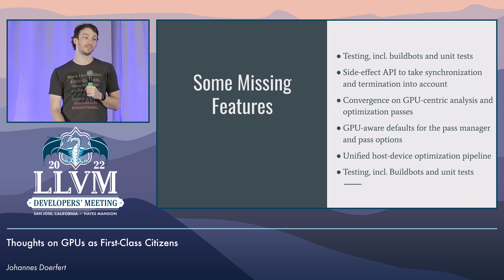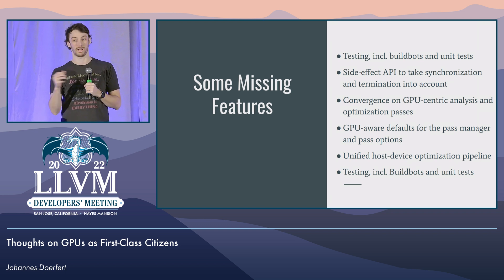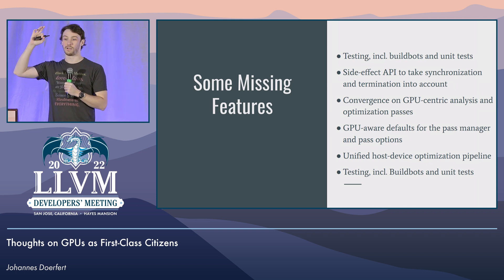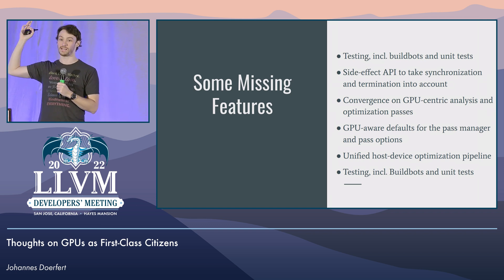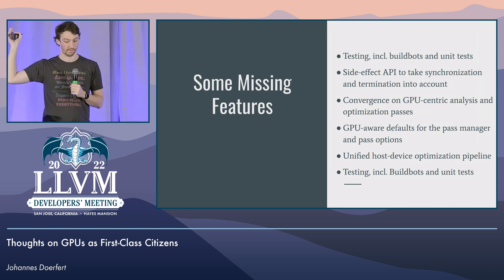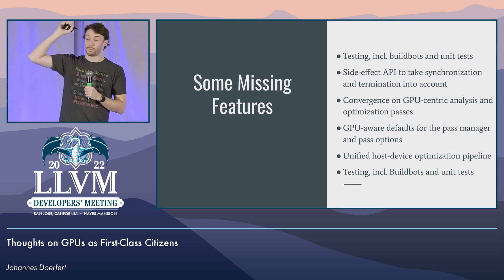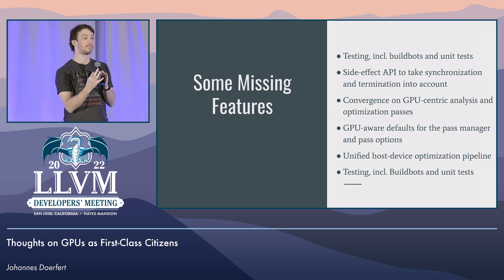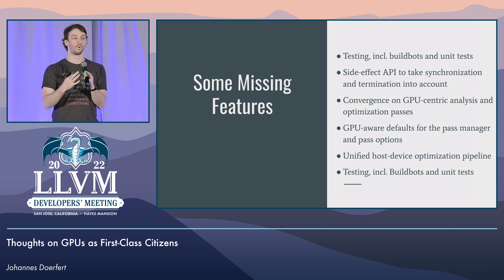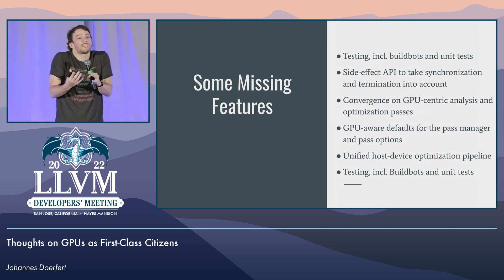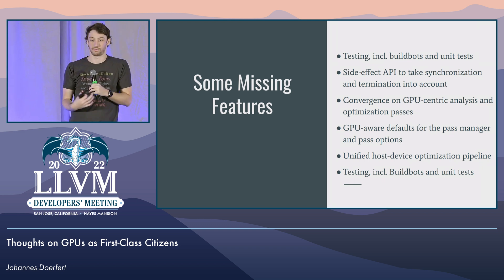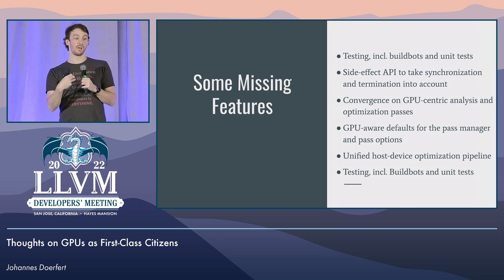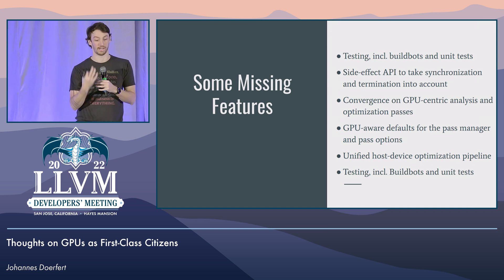Termination and especially synchronization are often not taken into account in all of our side-effect reasoning. There are so many hacks we've put in around those two because we didn't actually design the APIs right — so let's come up with better designs. We need to converge on CPU-centric analysis; for example, there's a lot of stuff in the AMD GPU backend that runs for AMD GPUs but there's no reason it couldn't run for other GPUs as well.